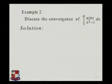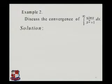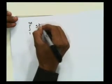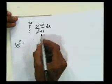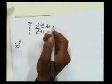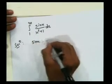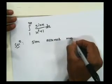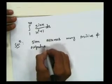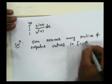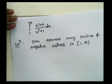The next example is: discuss the convergence of integration from 1 to infinity of sin(x) upon x squared plus 1 dx. We can verify that sin(x) takes many positive and negative values inside the interval 1 to infinity. Since sin(x) assumes many positive and negative values in this interval, it is advisable to use the absolute convergence test whenever the function changes its sign many times.